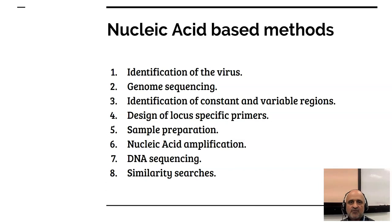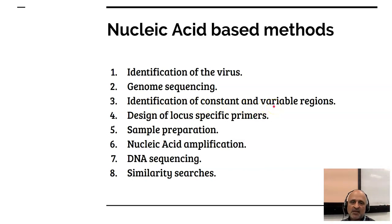Nucleic acid based methods are far simpler, however they involve multiple steps. The first step involves identification of the virus. Once we identify the virus, we can proceed to genome sequencing — many viral genomes are available at the NCBI GenBank for developing host-specific primers for PCR. We use algorithms to find constant and variable regions in a similarity search, then design locus-specific primers for that particular virus. Step five involves sample preparation — if working with a highly pathogenic virus, biosafety management protocols must be applied, which may involve inactivation of the viral nucleic acid.